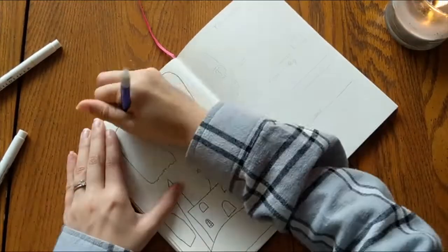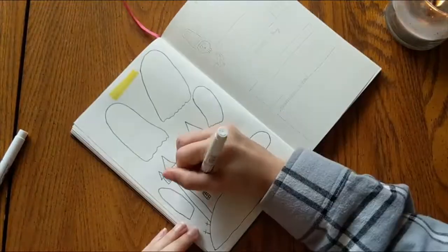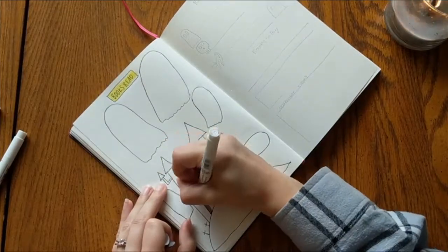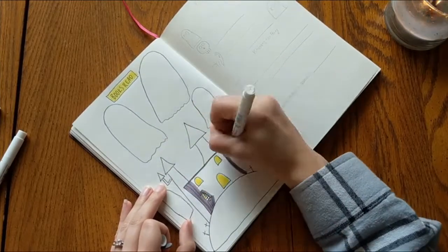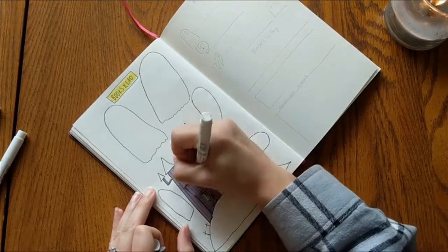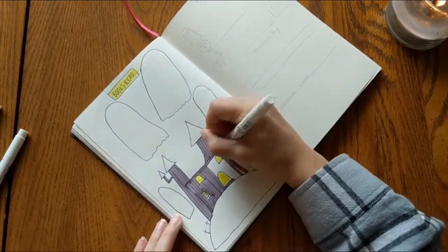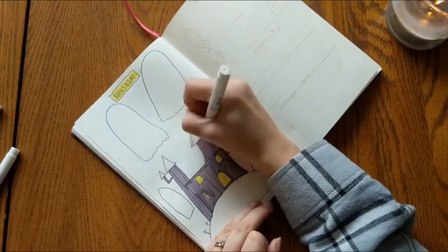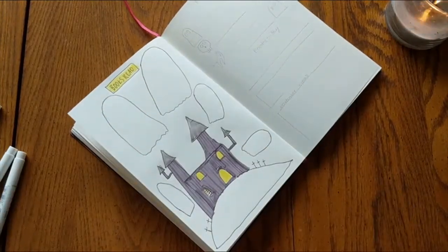And then we have my books read page. And this one again I'm pretty proud of. So it's the haunted house and the ghost will represent all the books that I've read throughout the month. So I will just write in the ghosts, I might sort them by star rating, have one ghost be like a four star ghost, the other be a five star ghost, but that really just depends on the books I read throughout the month.